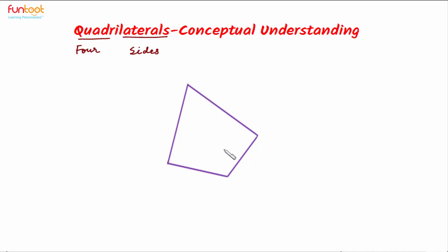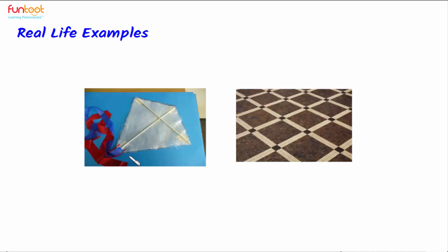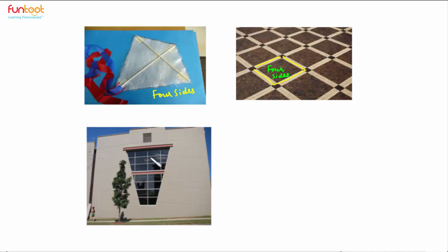This is a quadrilateral — it has four sides. Let's see some real-life examples of quadrilaterals. Here we have a kite; the shape of the kite forms a quadrilateral with exactly four sides. Similarly, the tiles on the floor also form a pattern with four sides, so this is also a quadrilateral.